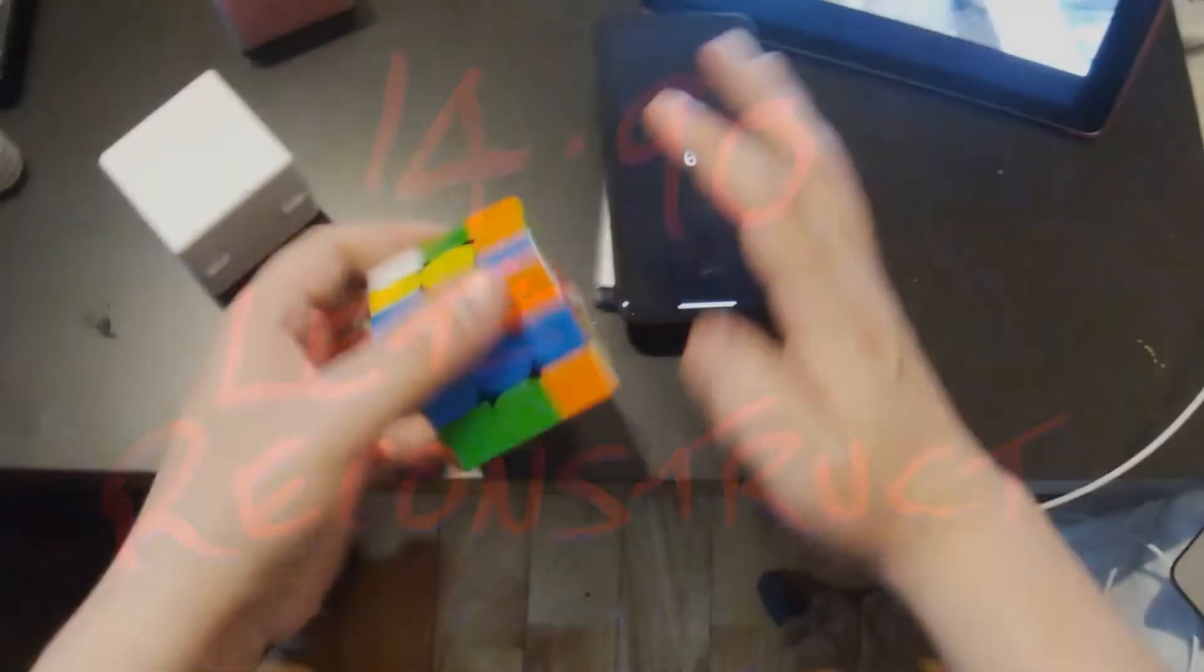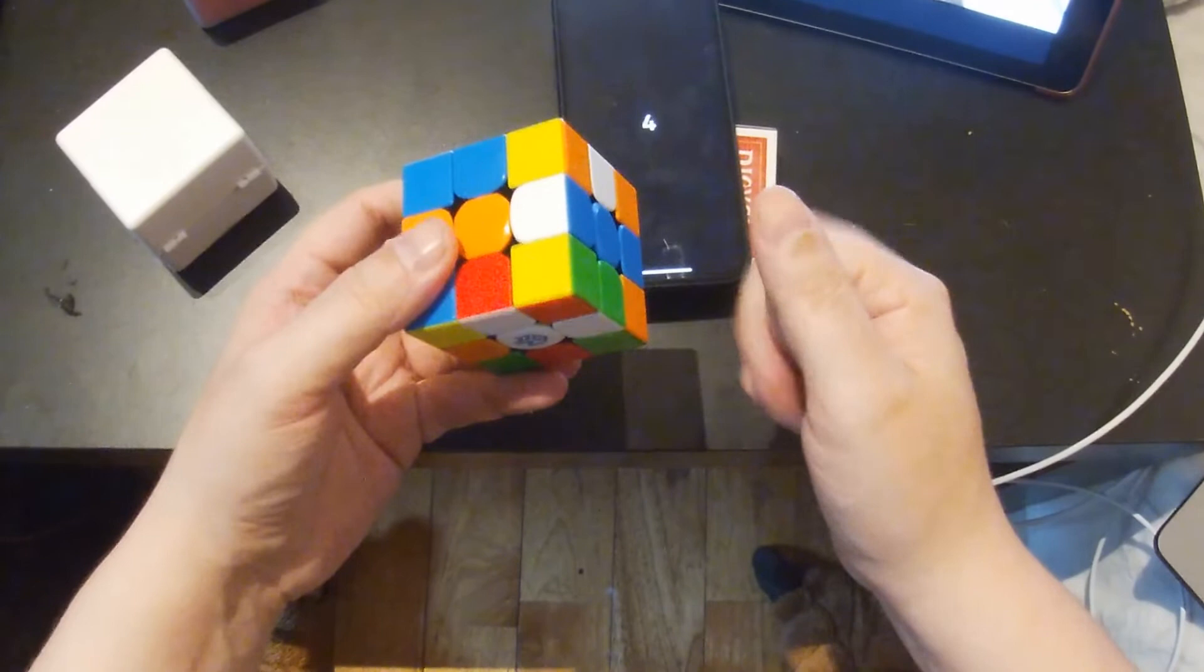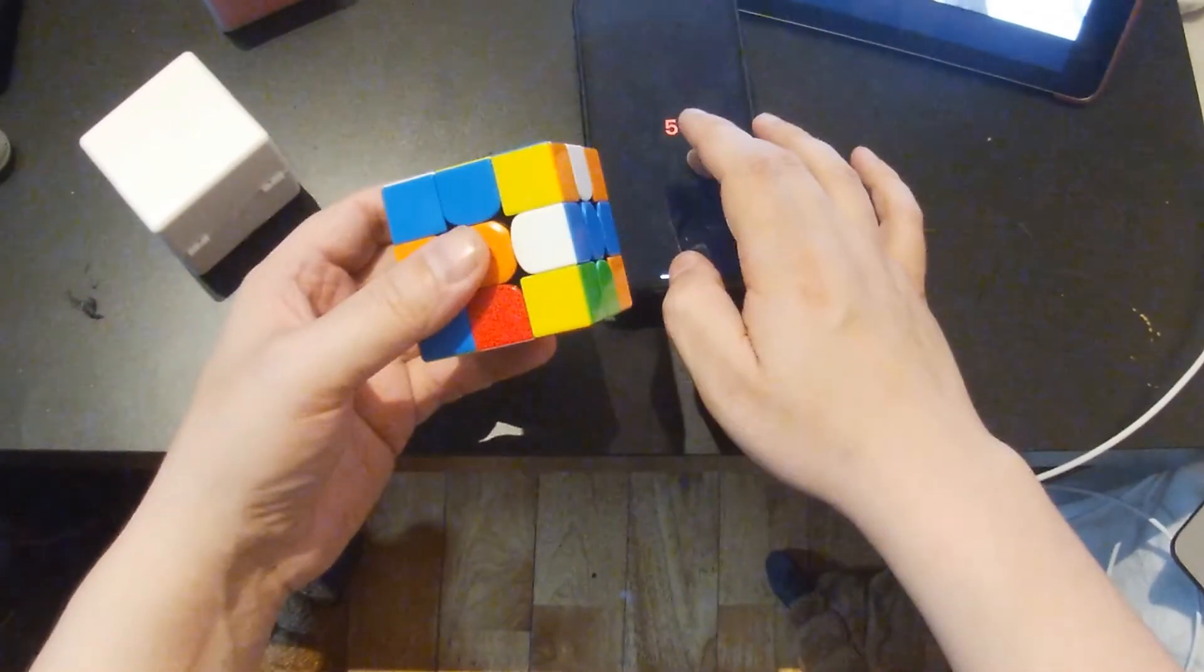Alright, anybody who's interested in comparing notes, on inspection, I was X2Y prime. I'm not going to really put the scramble up because it was there at the beginning, but I'm going to notice I've got the easiest cross in the world right here, which is just going to be D2, R prime, F.